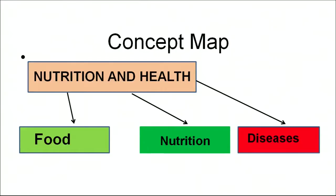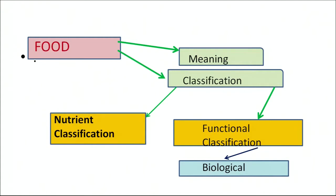Before moving on to the actual contents of the topic, let us see the major concepts which we have to cover. There are three major concepts in which this chapter has been divided. The first concept is food, nutrition and disease. In the subtopic of food, we have to cover the meaning of food, its classification on the basis of the nutrients present in it, and the functional classification — that is the biological functions which food performs in our body.